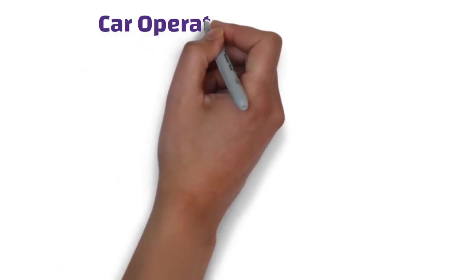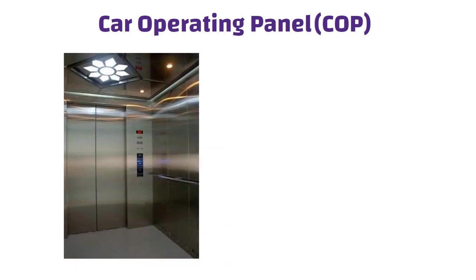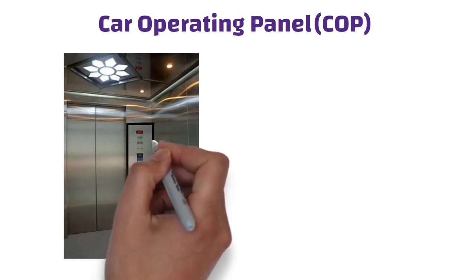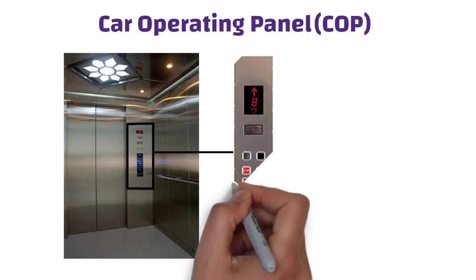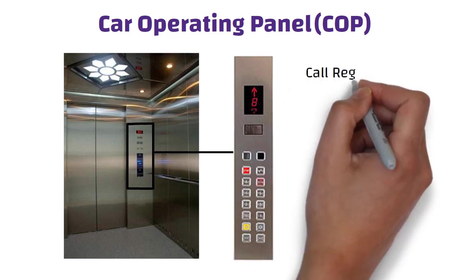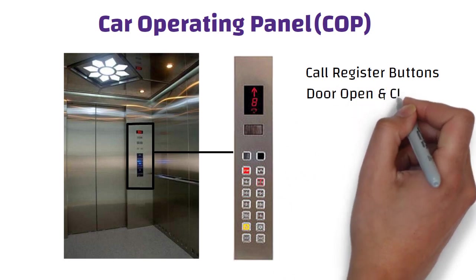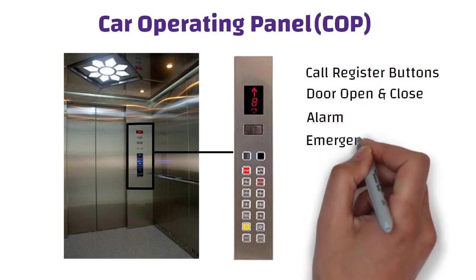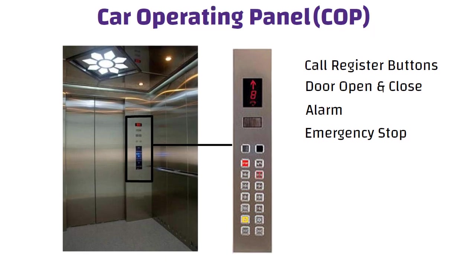Car operating panel, also known as COP. The car operating panel is a panel mounted in the car containing the car operating controls, such as call register buttons, door open and close, alarm, emergency stop, and whatever other buttons or key switches are required for operation.